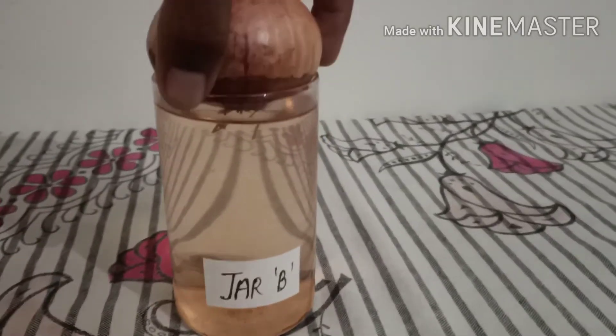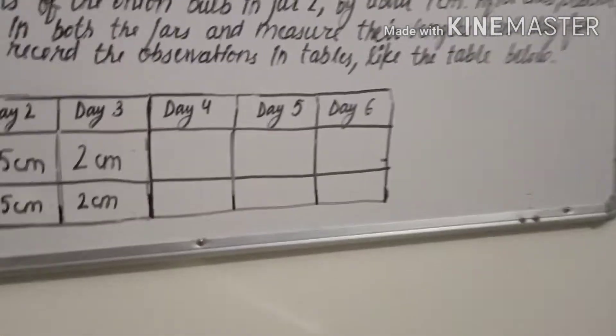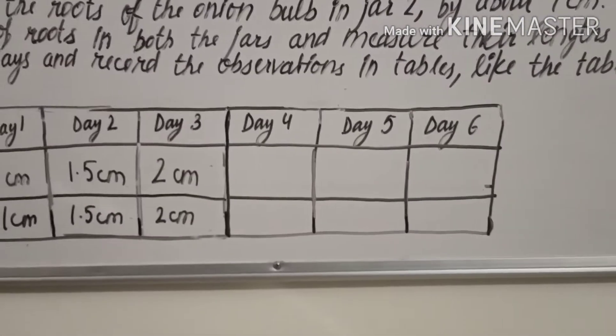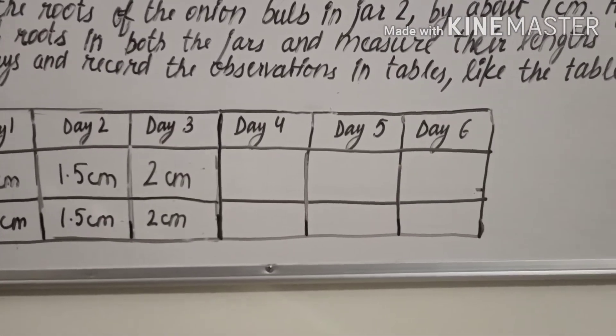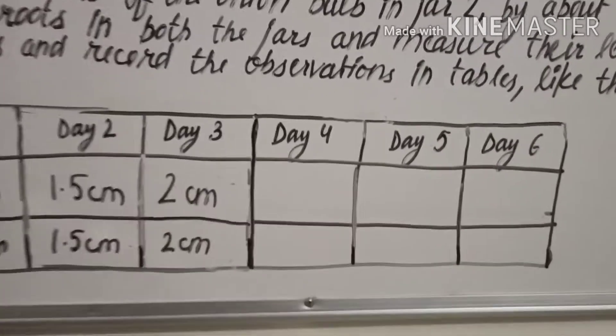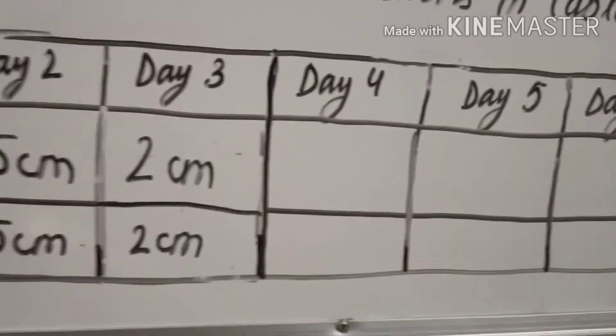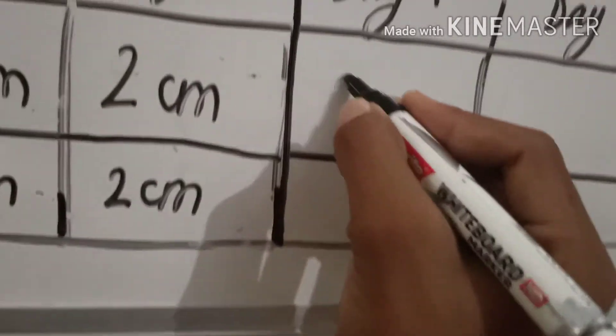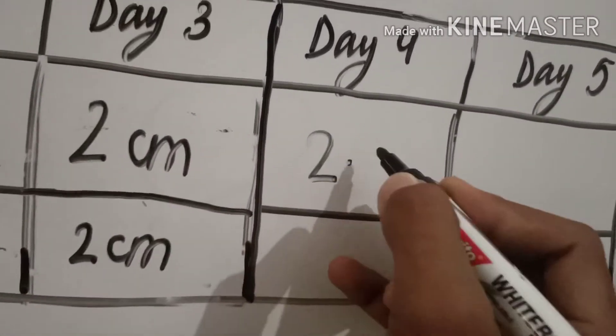We have cut the jar two root of this onion. In jar one, the roots are about 2.5 centimeters. Now we are writing this — jar one: 2.5 centimeters.